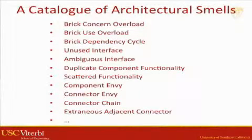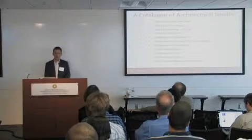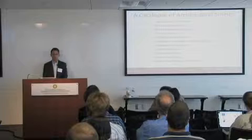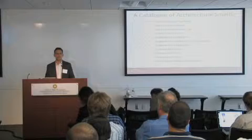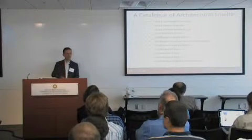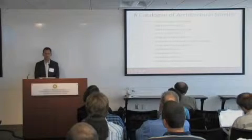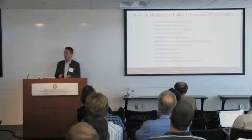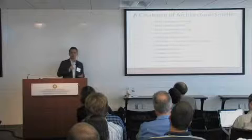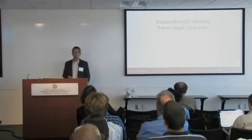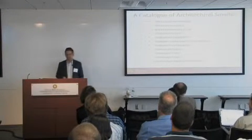These are the design-level smells we've been able to identify — a subset; there are about 20 so far and the catalog is growing. In some cases, a single component does multiple different things — that's what we call concern overload. In other cases, the same component is being used in different ways by different parts of your system — that's use overload. In other cases, you have dependency cycles, sometimes easy to spot, sometimes harder. You also have unused interfaces, ambiguous interfaces, and so on. They recur across all these systems regardless of domain, programming language, developers, or age of the system.